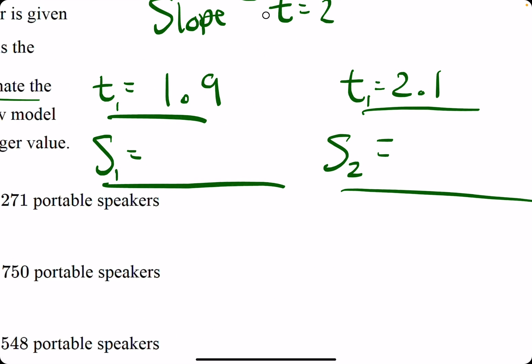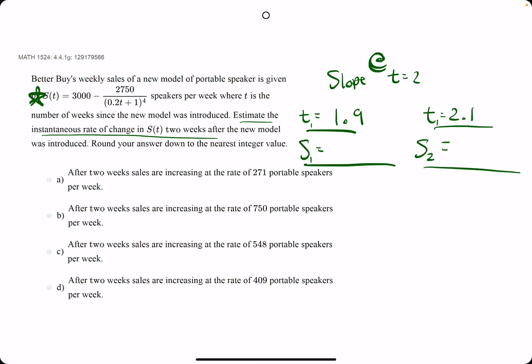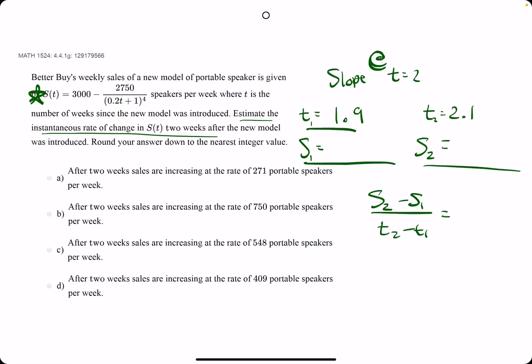We will get our second s value by plugging in 2.1. Once we get these two corresponding s values, we will find the slope between these two points by doing s2 minus s1 over—I'm sorry, this should be a t2—t2 minus t1. So, let's plug in some values.